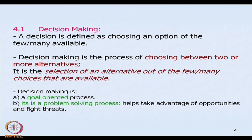The decision making process is defined as choosing between two or more alternatives — the selection of a particular alternative out of the many choices that may be available. When we talk about decision making, we speak of it in two perspectives. One, it is goal oriented — it helps you reach a desired state or an end objective. Second, it is a problem solving process. We start with a problem, look around for solutions, find alternatives, and choose the best one available.